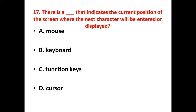17th bit: There is a dash that indicates the current position on the screen where the next character will be entered or displayed. Option A: Mouse. Option B: Keyboard. Option C: Function Key. Option D: Cursor. Answer — Option D: Cursor.